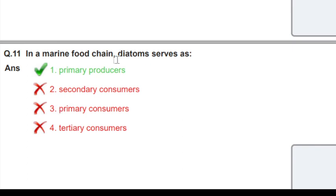In the marine food chain, phytoplankton serve as primary producers. The right answer is primary producers.